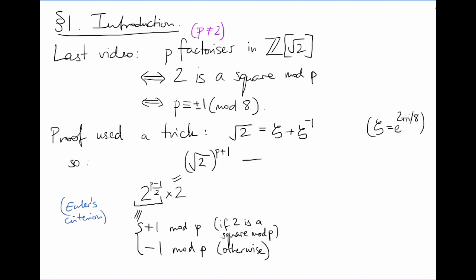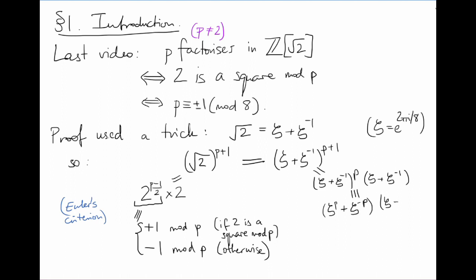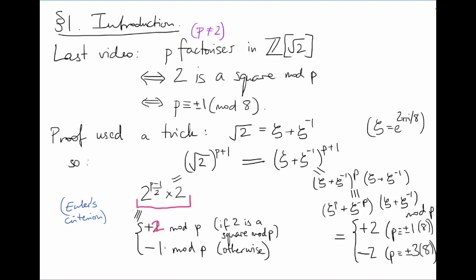And on the other hand, writing root 2 as zeta plus zeta inverse, this is (zeta plus zeta inverse) to the p times (zeta plus zeta inverse). The binomial expansion of this first factor is particularly simple mod p. We can use the cyclic nature of the powers of zeta to calculate this expression directly as either plus or minus 2, depending on the value of p mod 8. And now we just match the signs.